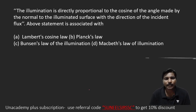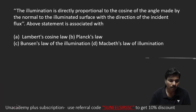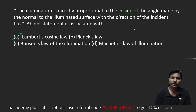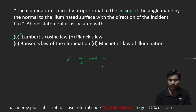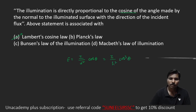The illumination is directly proportional to the cosine of the angle made by the normal to the illuminated surface with the direction of the incident flux. This statement is associated with Lambert's Cosine Law. As per Lambert's Cosine Law, illumination E = (I/d²) × cos θ, or in terms of height, E = (I/h²) × cos³θ.